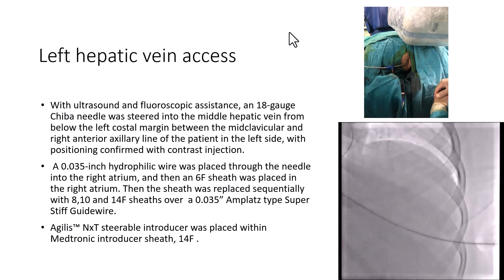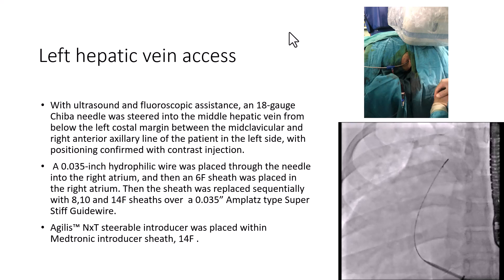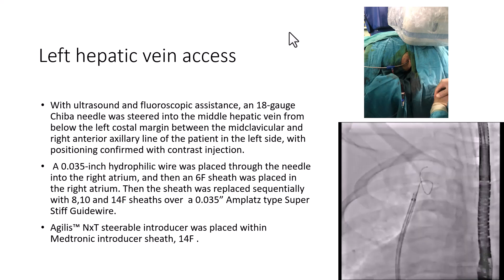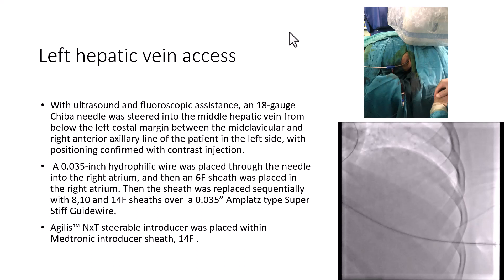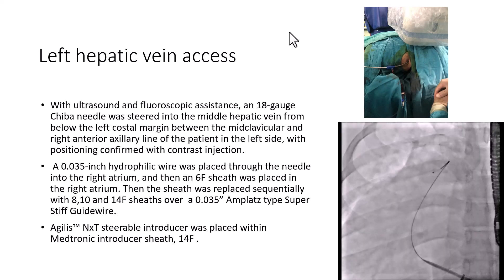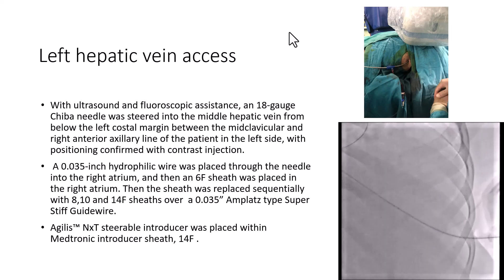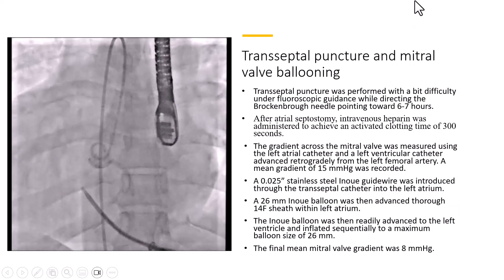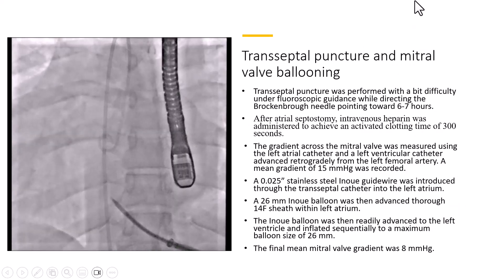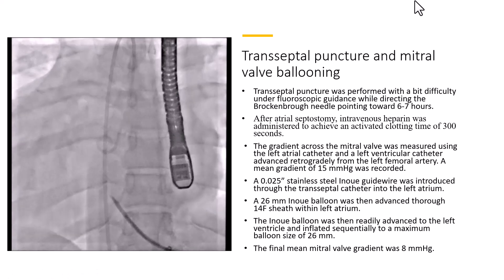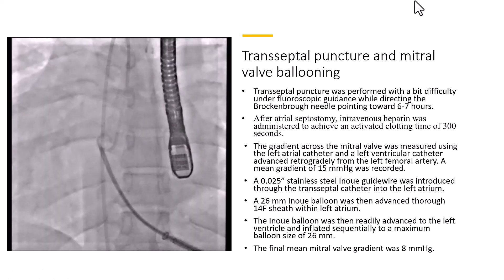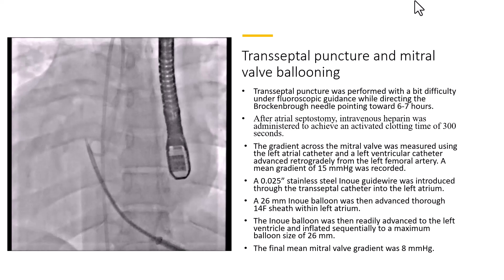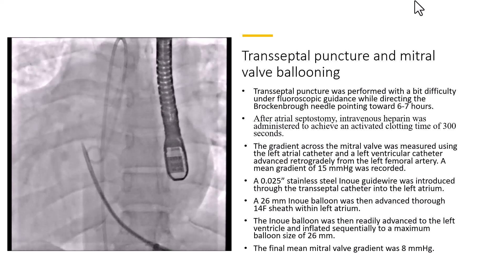The sheath was replaced sequentially with 8-, 10-, and 14-French sheaths over a 0.035-inch Amplatz-type super-stiff guidewire. At the end, an Agilis steerable introducer was placed within the Medtronic introducer sheath 14-French. A transseptal puncture was then performed with some difficulty under echo guidance, directing the Brockenbrough needle pointing toward 6–7 o'clock.